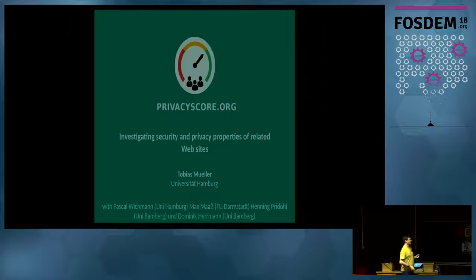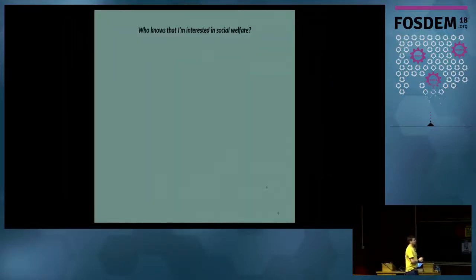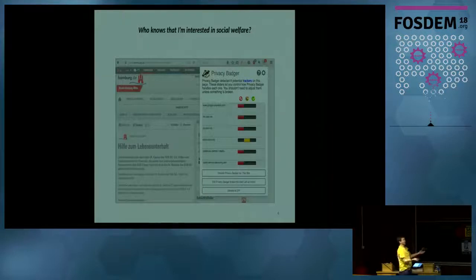So let's start. PrivacyScore.org is a service for investigating security and privacy properties of web pages. There are several definitions, depending on who you ask, of what it means for a website to be privacy-friendly or not. In our case, we were noticing that the city of Hamburg's web page—this is the website for social welfare—if I'm interested in social welfare, I visit this website hamburg.de, the city where I live in. On this website you have multiple trackers, plenty. These are the companies that also know that I'm interested in social welfare.